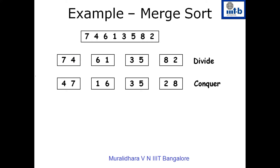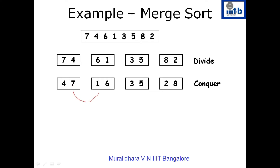Now we combine these two sorted pairs. Combining four, seven with one, six gives us one, four, six, seven. Combining three, five with two, eight gives us two, three, five, eight.